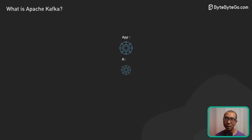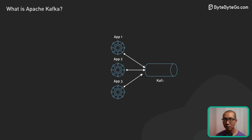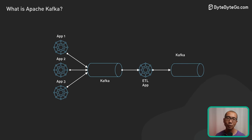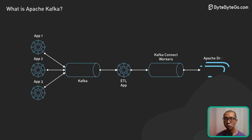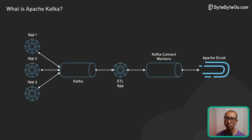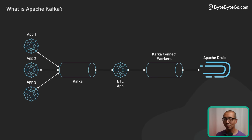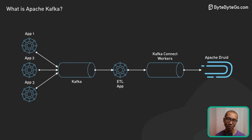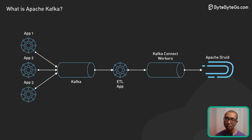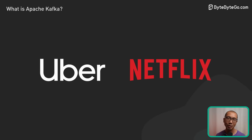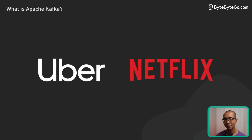A major use case is activity tracking. Kafka is ideal for ingesting and storing real-time events like clicks, views, and purchases from high-traffic websites and applications. Companies like Uber and Netflix use Kafka for real-time analytics of user activity.